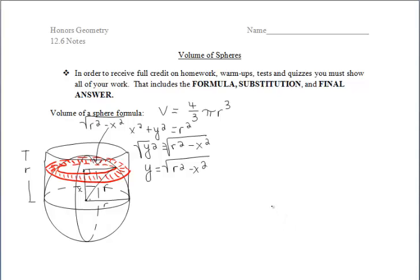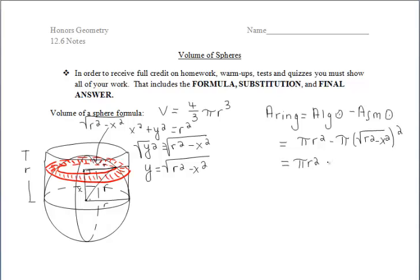To find the area of that ring, we take the area of the large circle and subtract off the area of the smaller circle. The radius of the larger circle is r, so its area is πr². We subtract off the area of the smaller circle with radius √(r² − x²). Squaring that square root eliminates the radical, leaving π(r² − x²). Distributing the π and canceling the πr² terms, we're left with πx², which is the area of our ring.